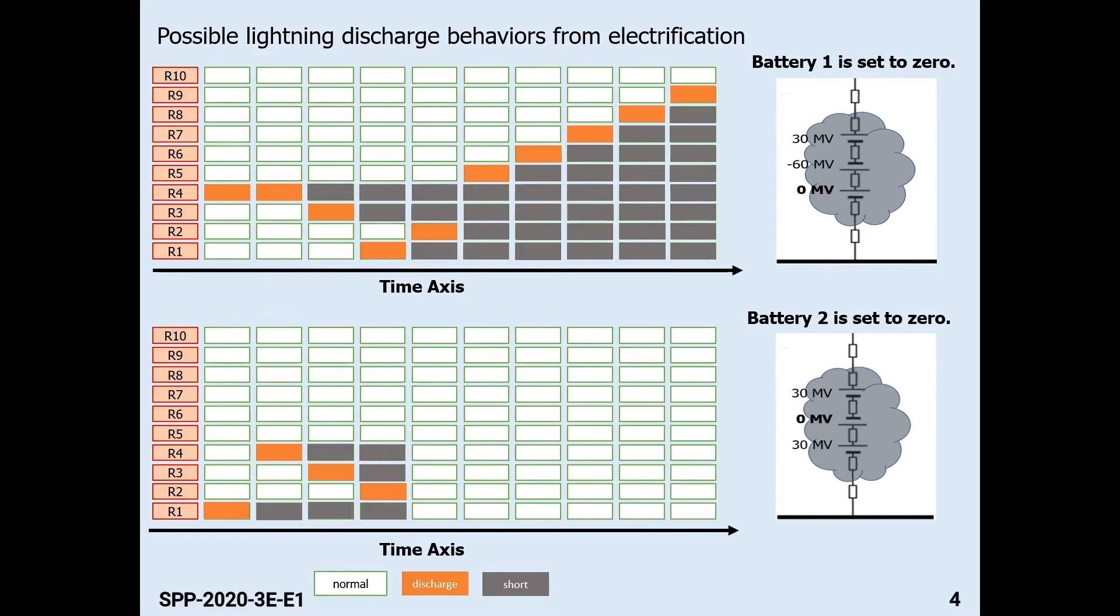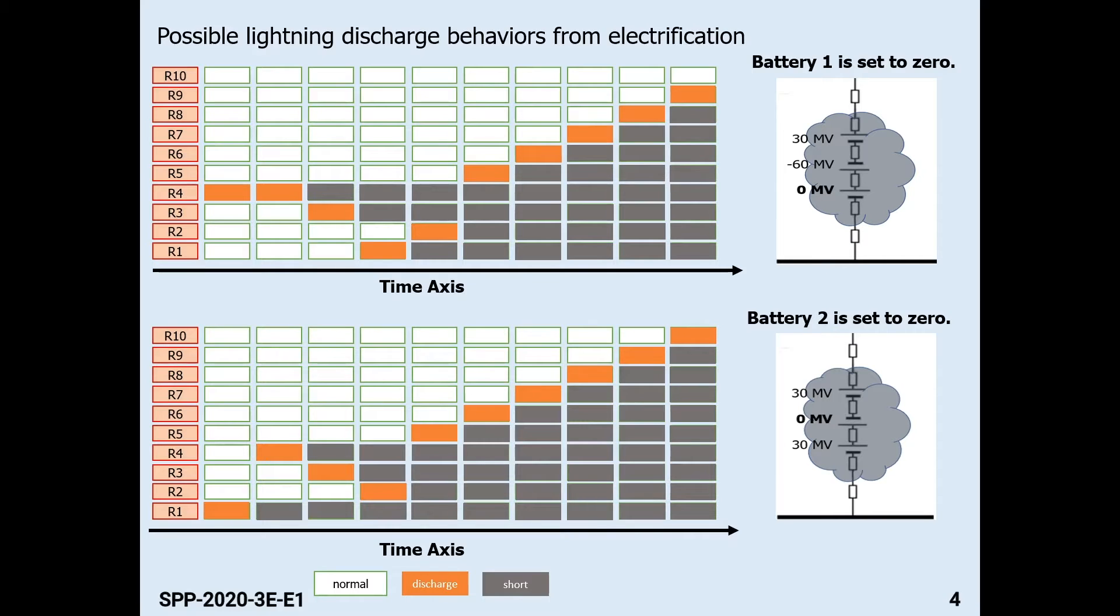For case 2, where we remove the negatively charged battery, the resulting sequence of lightning discharge is R1, R4, R3, R2, R5, and it dissipates in the higher altitudes.